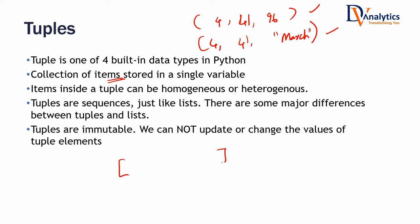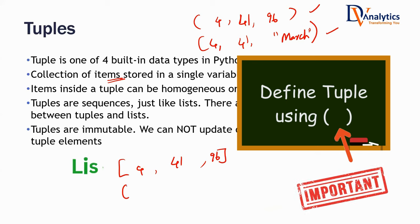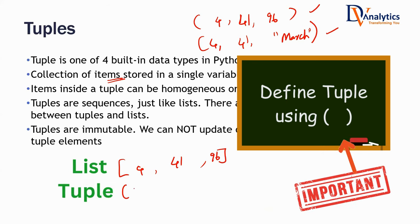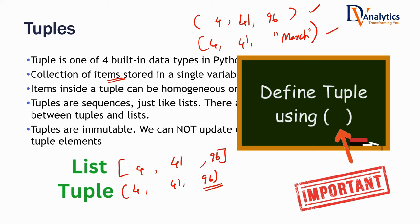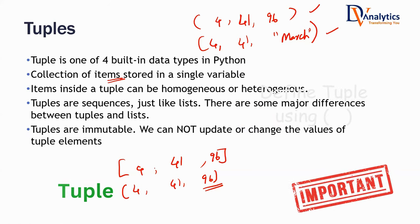List is defined in square brackets — for example, 4, 41, 96 is a list. If you put it in round brackets like this, 4, 41, 96 in parentheses, then this is called a tuple. The tuple in many ways looks just like a list, but there are some fundamental differences between tuple and list.